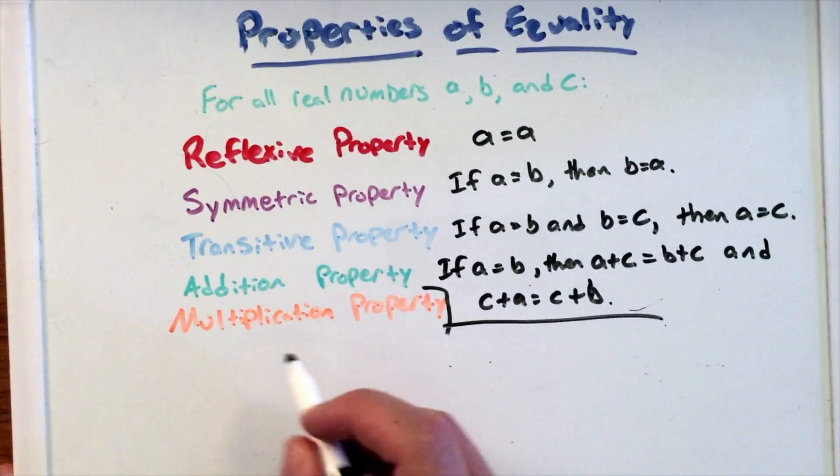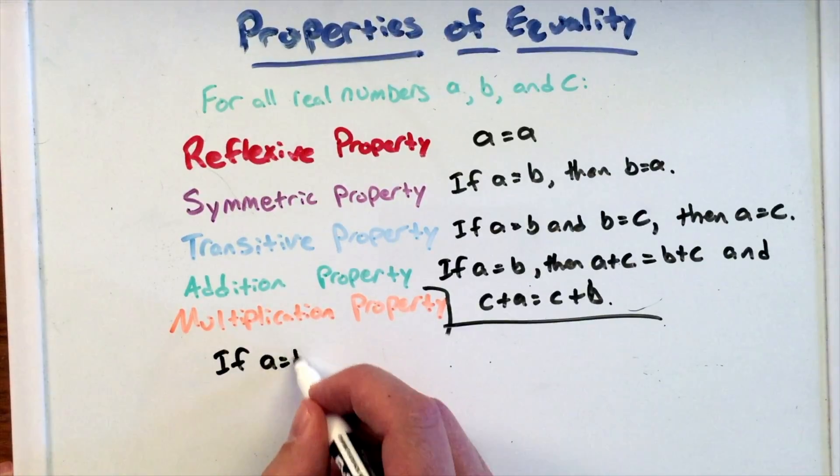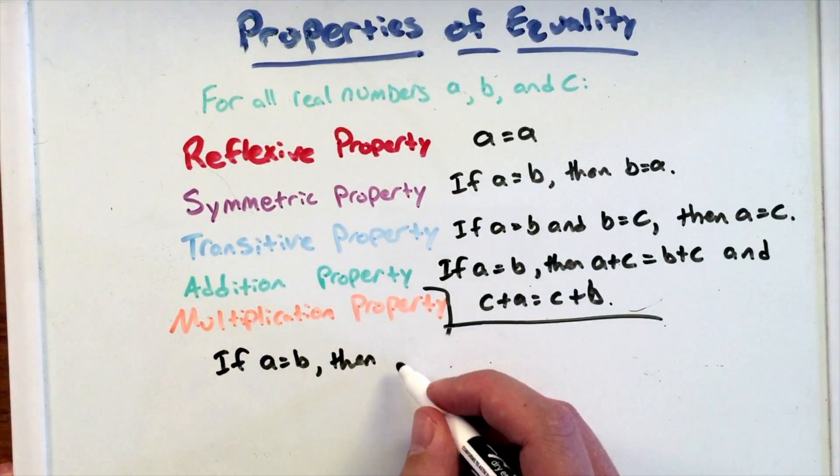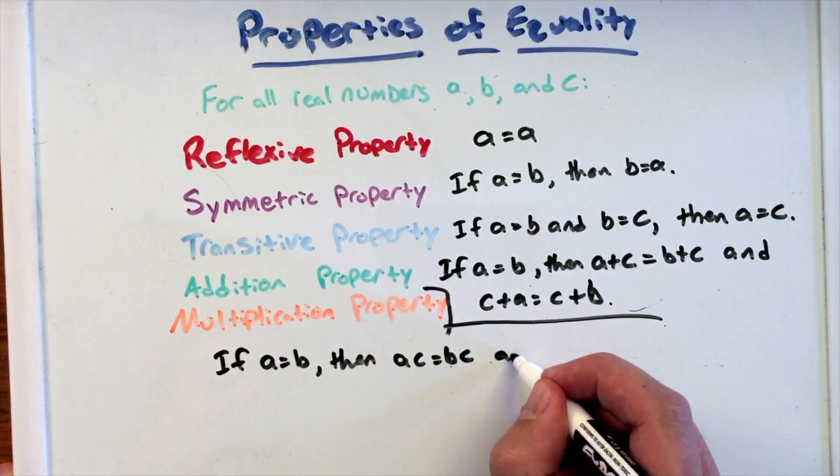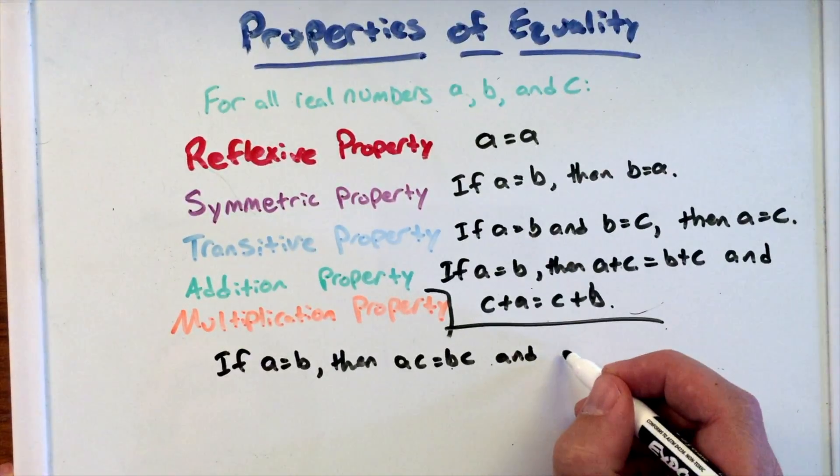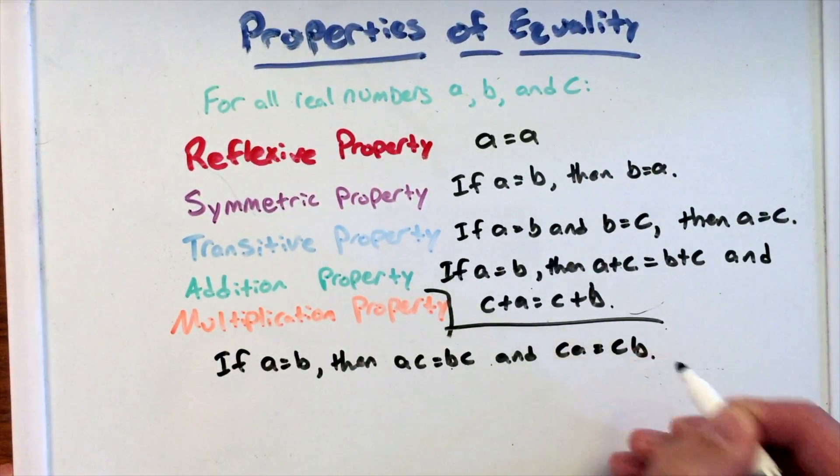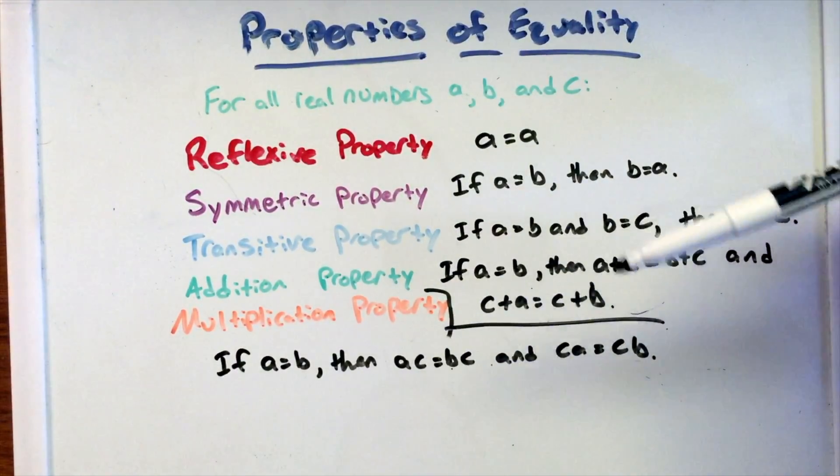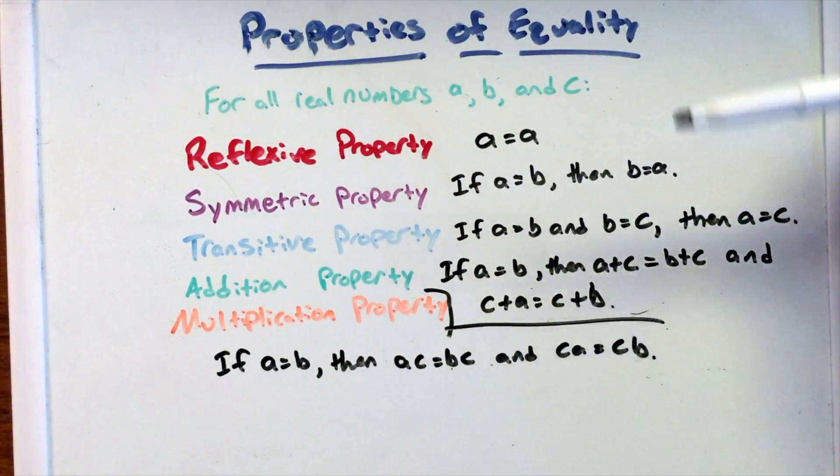Now the multiplication property. We'll see: if A equals B, then AC equals BC, and CA equals CB, very similar to the addition property. Instead of adding a common letter C to both sides - that real number again, all real numbers we can get - any real numbers out there, similar to the addition property, we're just doing multiplication on both sides.